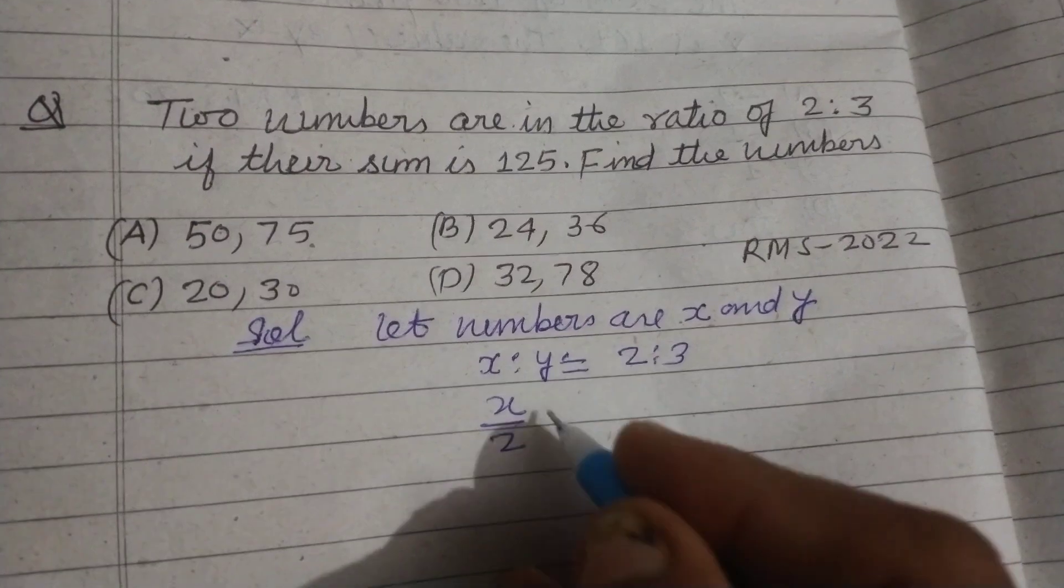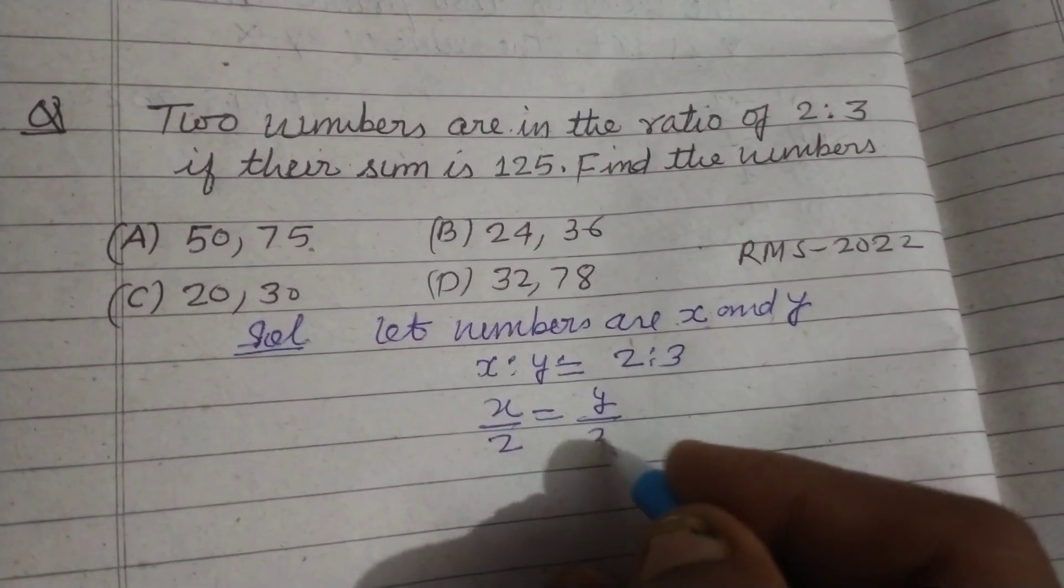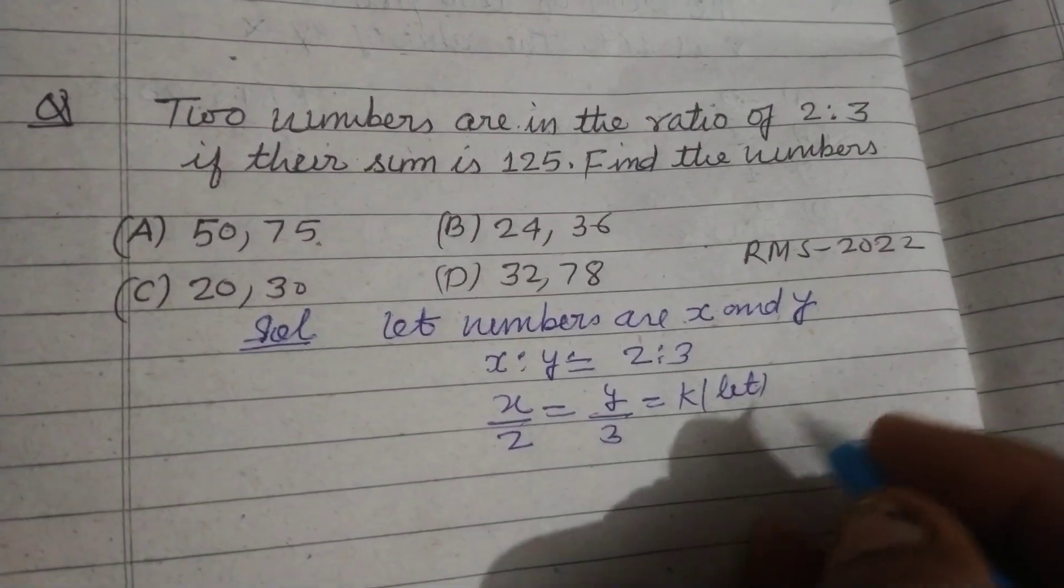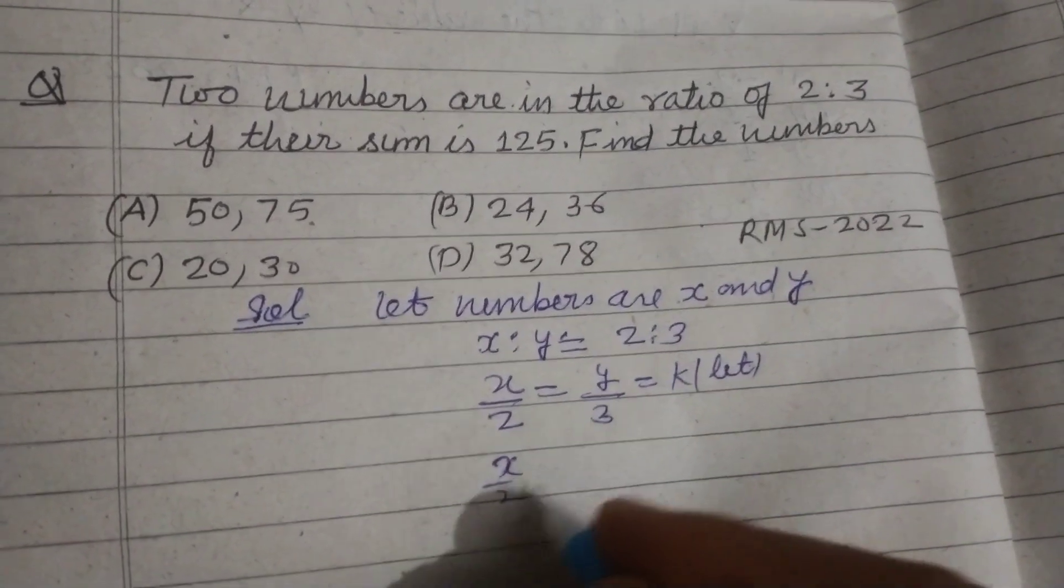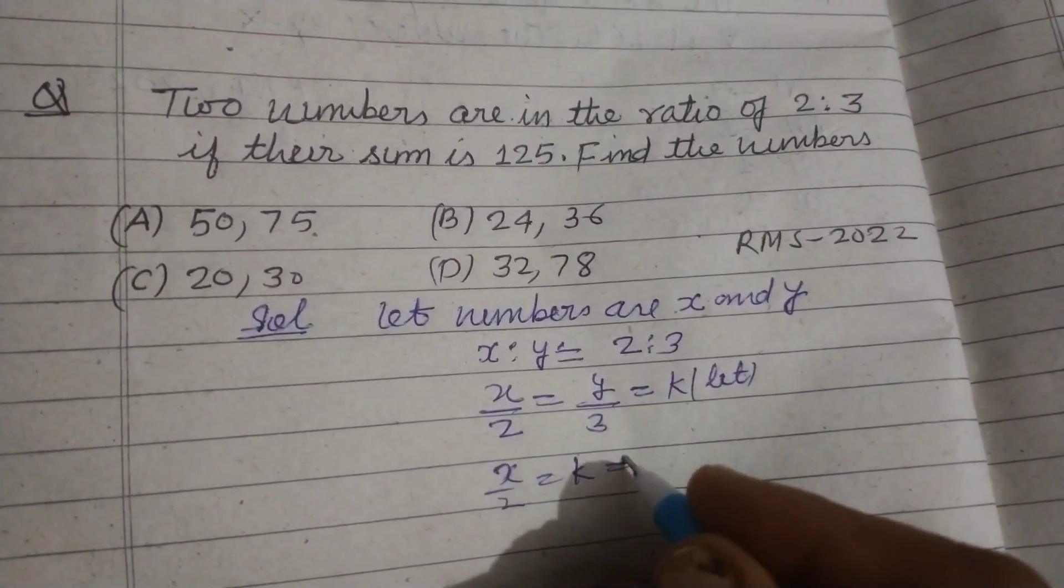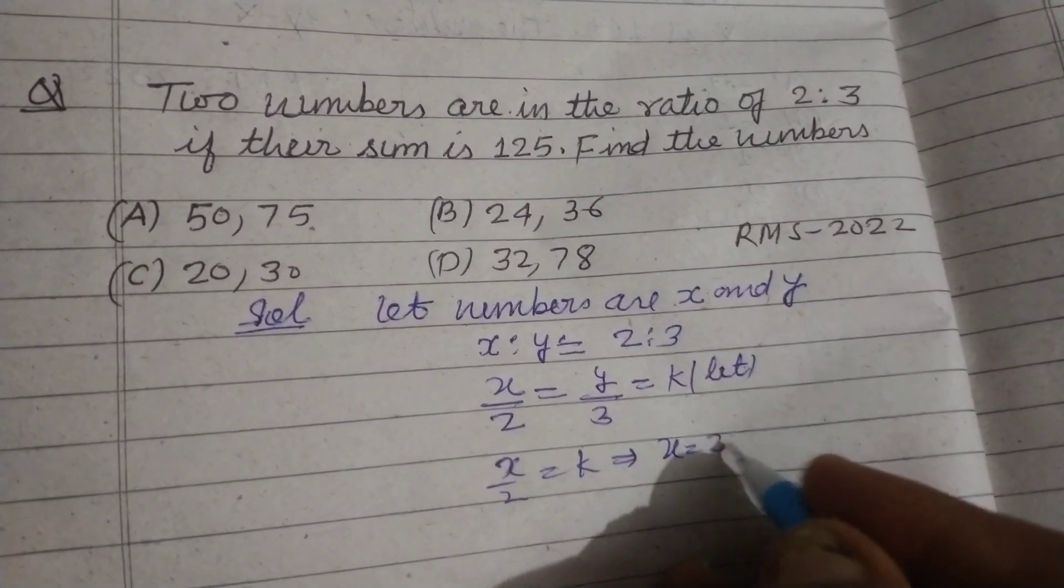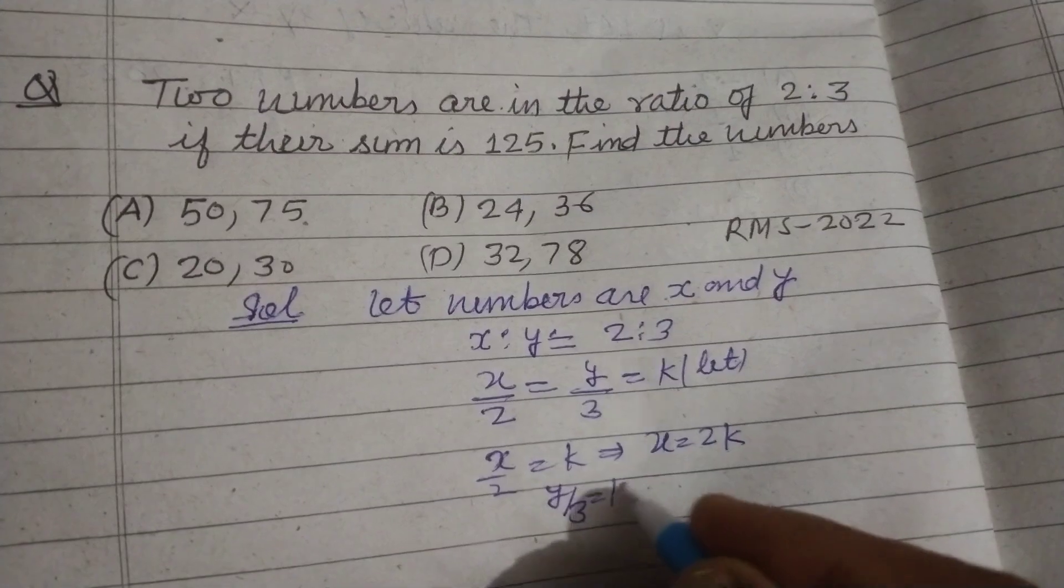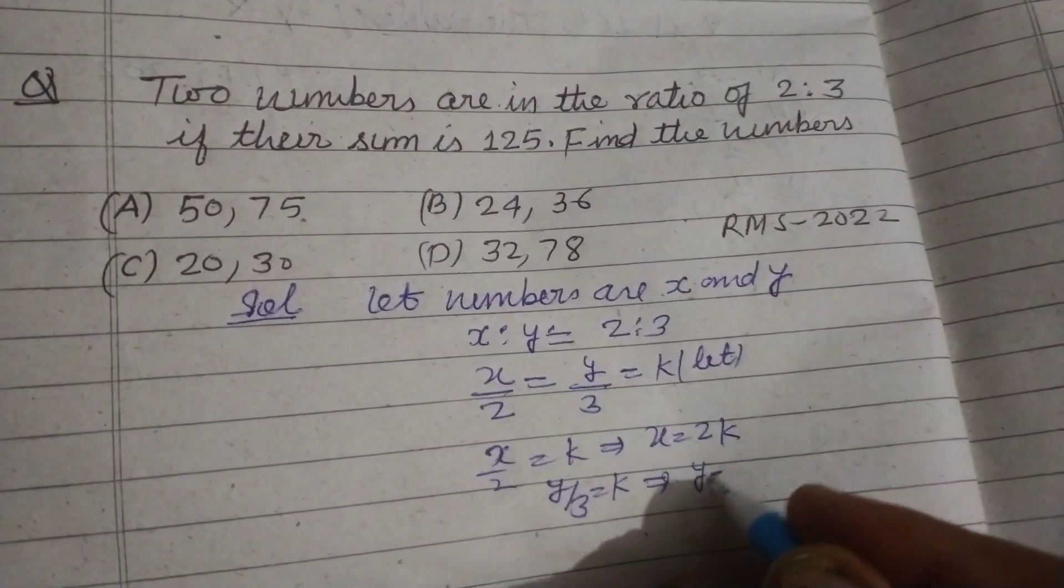It means x/2 = y/3 = k. Let it be k. Therefore, x/2 = k means x = 2k, and y/3 = k means y = 3k.